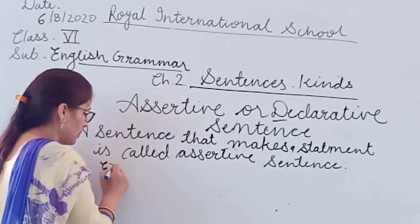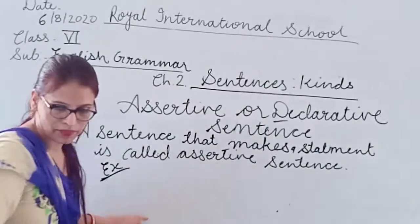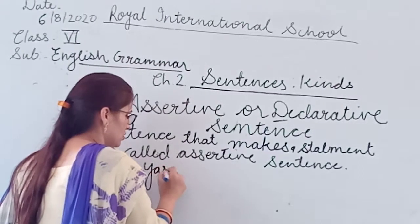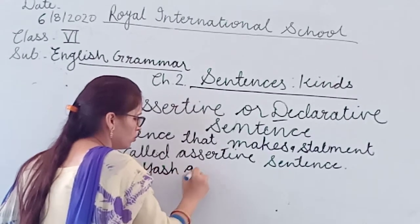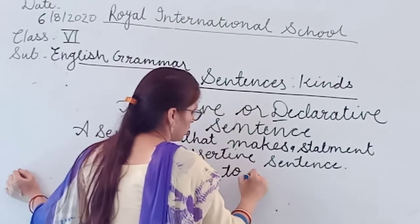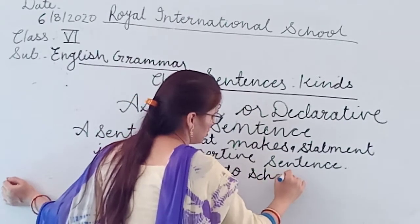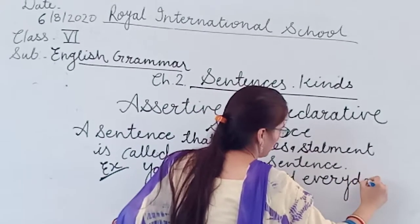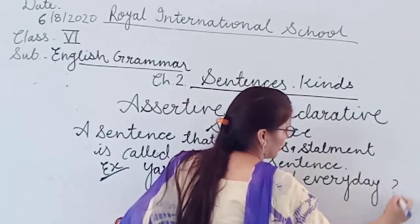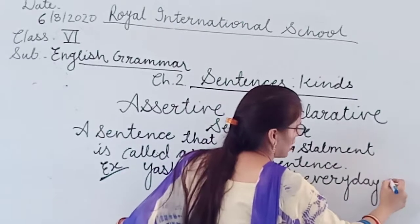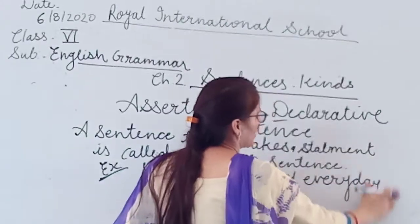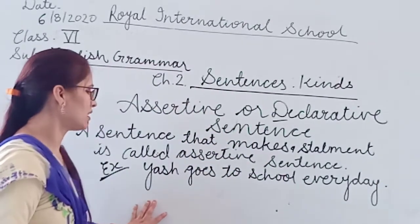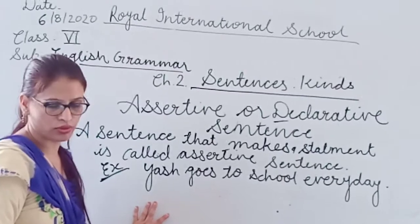I am giving you an example. The example is: 'Yesh goes to school everyday.' Here there is no question mark, so it is not an interrogative sentence. There is no exclamation sign, so it is not an exclamatory sentence. It is a simple sentence.